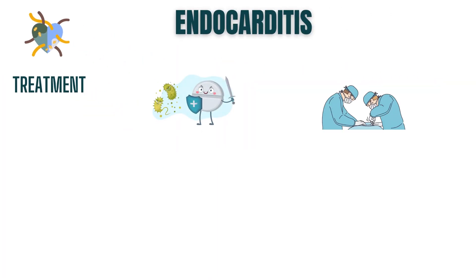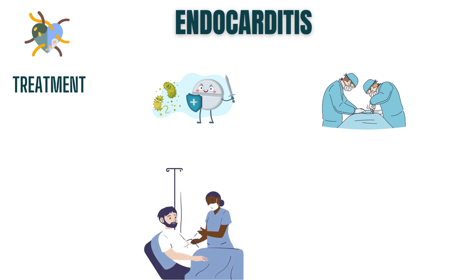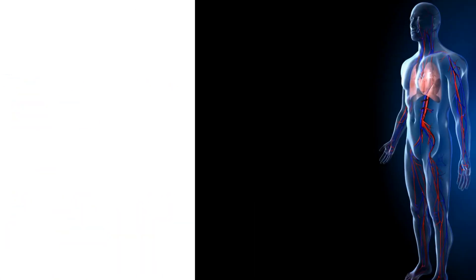Treating endocarditis involves a combination of antibiotics and, in some cases, surgical interventions. Antibiotics are administered intravenously to combat the infection and prevent further damage to the heart. In severe cases, surgical interventions may be necessary to repair or replace damaged heart valves, remove infected tissue, or drain abscesses. These procedures are performed by skilled cardiothoracic surgeons.